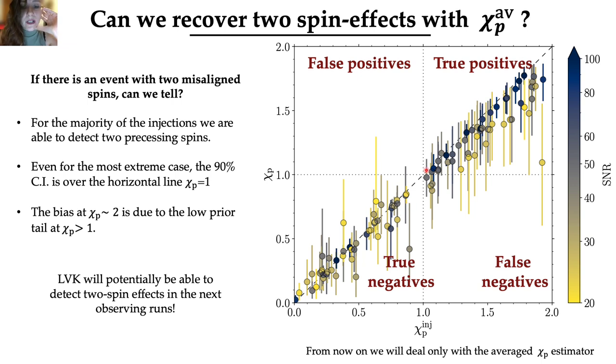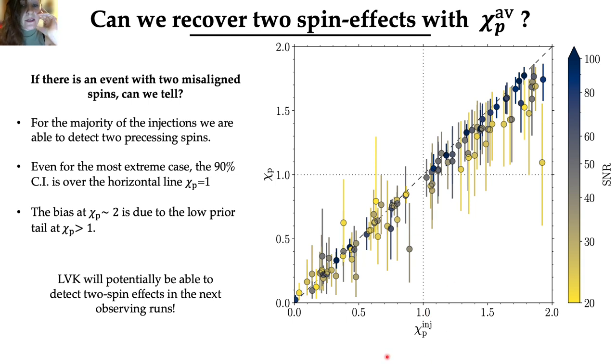Instead, if we go in the region where χp is greater than 1, all the scatter points are systematically underestimated and this bias is caused by the low prior volume at χp greater than 1. And in any case, for the majority of the events where χp injected is greater than 1, we are able to detect two precessing spins. And also for the most extreme case where χp is near 2, all the posteriors are above the horizontal line at χp equal 1, meaning that for these sources we can infer with high confidence the presence of two precessing spins. And since for this injection we are using the O4 sensitivity curve we can say that it's very likely that already in the next observing run, LIGO, Virgo and KAGRA will observe two precessing spins in single events.